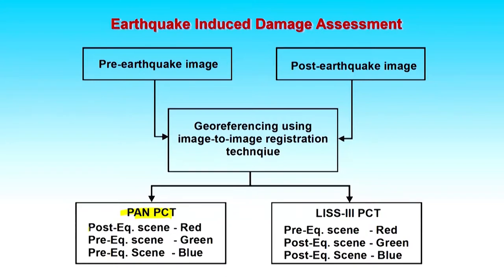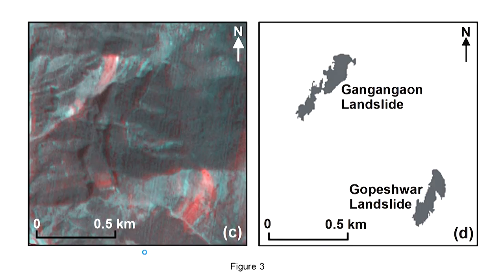What we did was assign the red color to the post-earthquake image and green and blue to the pre-earthquake image. This combination is neither a false color composite nor a true color composite, so we gave it the name pseudo color composite. The advantage is that both pre-earthquake and post-earthquake image pixels are on the same image. The red areas visible in certain regions represent changes in reflectance induced by the earthquake event of 29th March, and the time difference between these images is only 5 days.